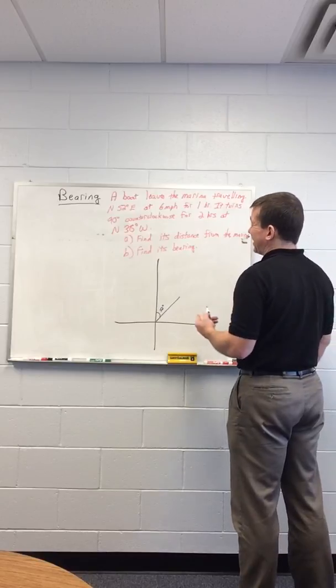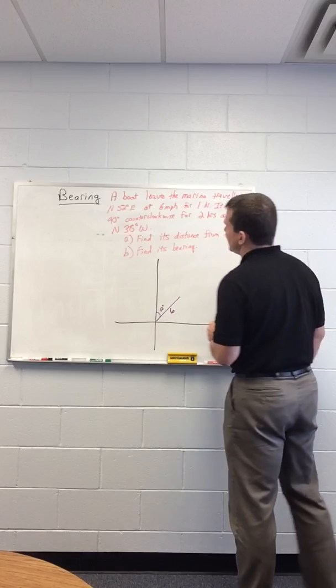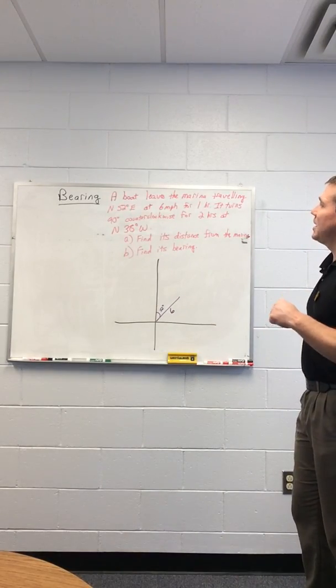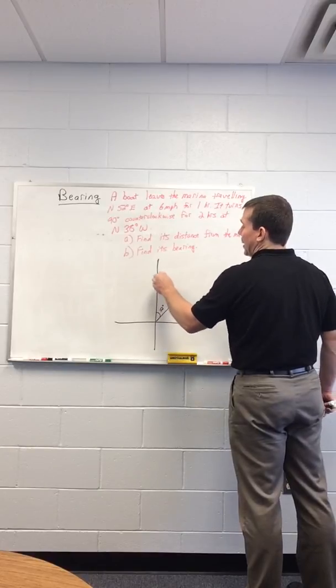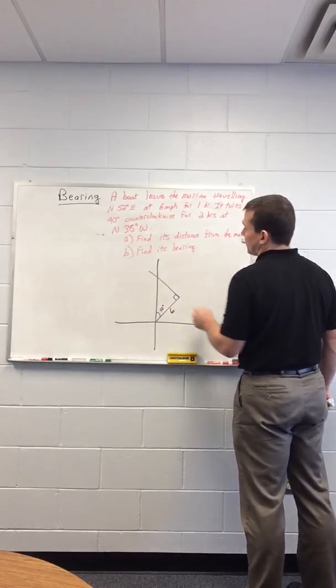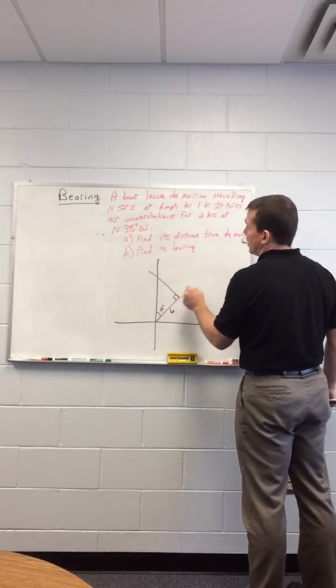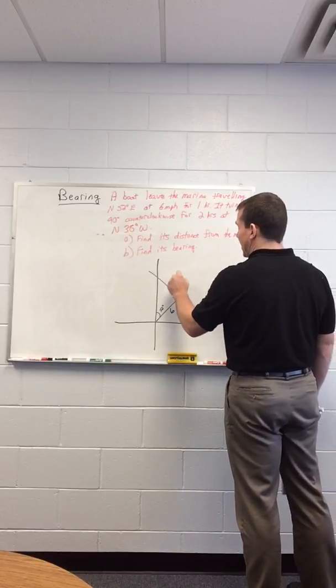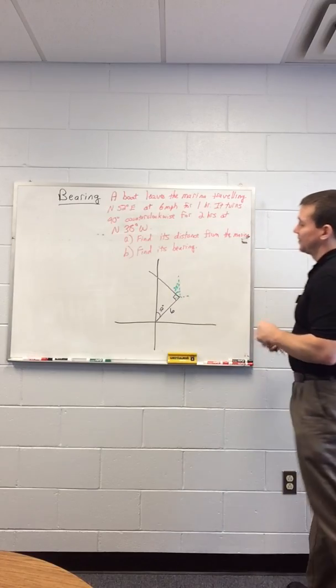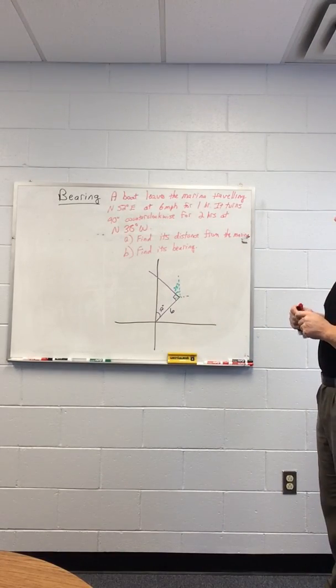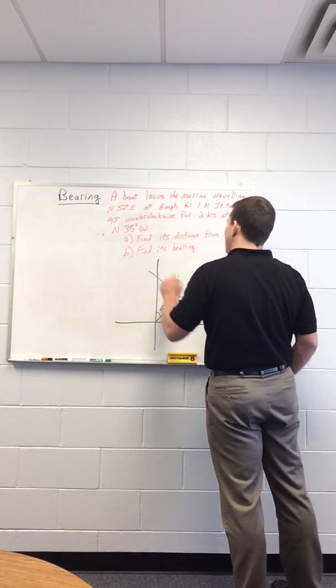I travel at six miles per hour for one hour, which means I travel six miles. That's easy enough. I turn 90 degrees counterclockwise, which basically means I go 90 degrees over here. This new bearing is north 38 degrees west, which means this angle right here is 38 degrees west. I do that for two hours at the same speed, which means this side is six miles per hour for two hours, which is 12 miles.